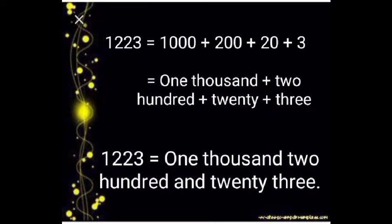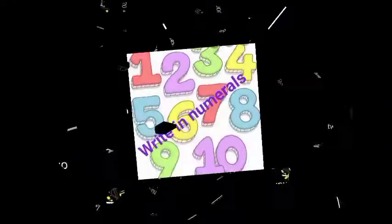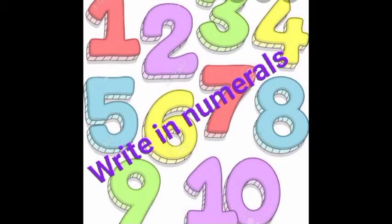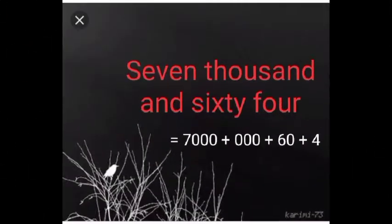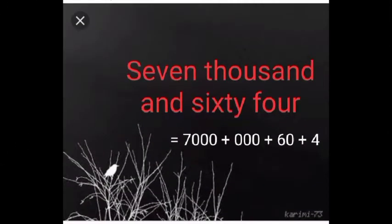So the number name of 1223 is one thousand two hundred and twenty-three. Now let us see how to write number names in numerals. The first question is 7064. Write the given number name in numeric expanded form: 7000 plus 0 plus 60 plus 4, and add the numbers.